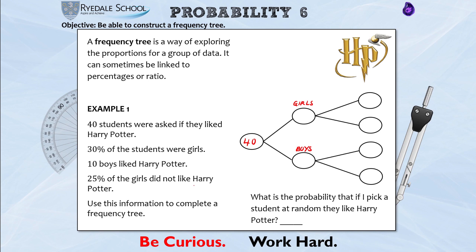A frequency tree shows you the grand total, which is 40, and then it splits into categories. Reading through the question, the categories are girls and boys. Then they're talking about whether they liked Harry Potter — so I'm going to put 'like' and 'dislike' as branches for each. Always make sure you are labelling a frequency tree so you know what each circle represents.